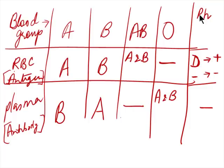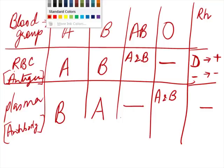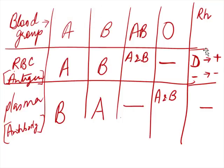For the Rh system, the antigen we use is D. If they do have antigen D, then we say they are positive. If they do not have the antigen, then we say they are negative. We can also write negative as -VE, and positive as +VE.